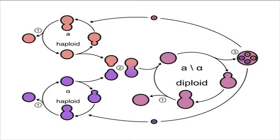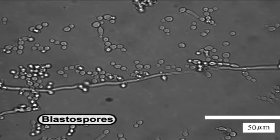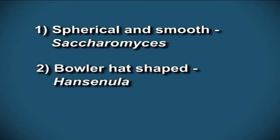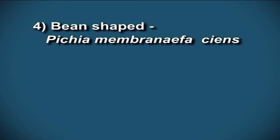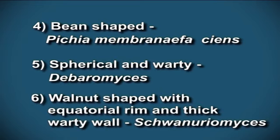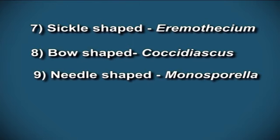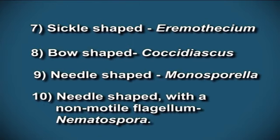Now we know about yeast spores. Yeast also produce spores by both sexual and asexual reproduction methods. Asexual spores are of four types: blastospores, arthrospores, ballistospores, and chlamydospores. Yeast spores appear in 10 different shapes: spherical, smooth, bowler head shape, saturn shape, bean shape, spherical and warty, walnut shape with equatorial rim and thick warty wall, sickle shape, bow shape, and needle shape with a non-motile flagellum.